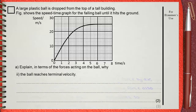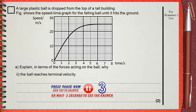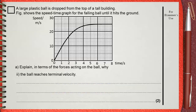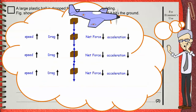Part two: why does the ball reach a terminal velocity? Let's see our diagram again. As the box continues to fall, somewhere the weight downwards will equal the drag force upwards. In this case, the net force is zero. This means that the acceleration is zero and the box will now fall with constant speed. This constant speed is called the terminal velocity.